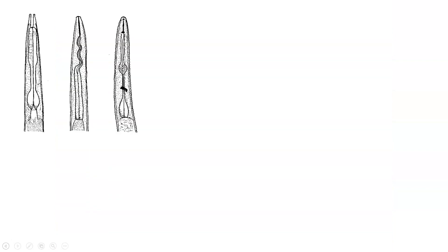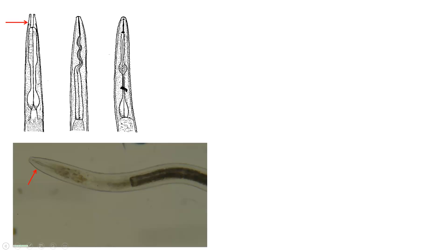Nematodes are parasitic roundworms and normally have an elongate shape. We differentiate them based on their mouth parts. Free-living nematodes feed on soil matter and have open mouth parts, as seen in this nematode, which is free-living and has open mouth parts.